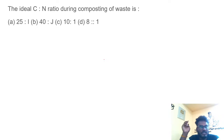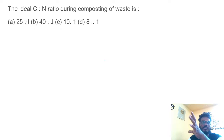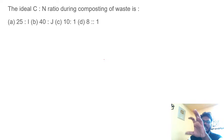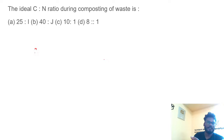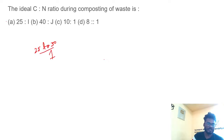The ideal carbon-to-nitrogen ratio during composting of waste: carbon acts as food and nitrogen acts as a cell developer. The correct carbon-to-nitrogen ratio for proper microbial and bacterial action and decomposition is 25 to 30 by 1. So option A.